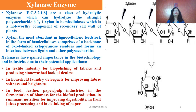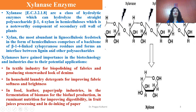Let us see the properties of xylanase. It is a class of hydrolytic enzyme with chemical classification number EC 3.2.1.8. This enzyme can hydrolyze the straight-chain polysaccharide beta-1,4-xylan in hemicellulose, which is a noteworthy component of the secondary cell wall of plants. Xylan is mostly present in lignocellulosic feedstocks from hemicellulose and comprises a backbone of beta-1,4-linked xylopyranose residues, forming an interface between lignin and other polysaccharides.